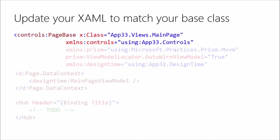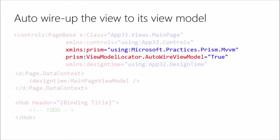You're going to do that change in the code behind, but you're also going to do it in your XAML as well. See where it says Controls:PageBase — that's because your PageBase is in your controls namespace. Don't forget to change both. Sometimes you change one and not the other, which is a source of problems. Then the next thing is the AutoWireViewModel. It's basically our way of saying to the navigation service: whenever you navigate to this page, go find the view model that belongs to it, bring it in, and set it as the data context.